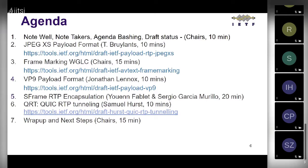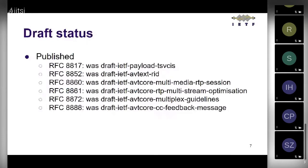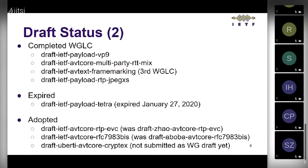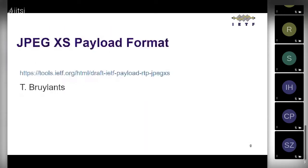A little bit about draft status: we've published a whole ton of RFCs, many of them in cluster 238. We have four drafts that have completed working group last call, three of which we'll talk about today. We have one expired draft — there's an action item for Jonathan to follow up on that. We've adopted three documents: the EVC draft, CryptX, and 7983 bis.